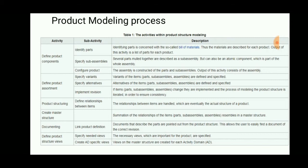The fourth activity is product structuring — how the relationships and assembly constraints are created. The fifth is creating a master structure. Finally, the sixth activity is documentation — how the product is completely modeled, what requirements are needed for the market, and producing the complete chart. Finally, the product structure views are to be made.